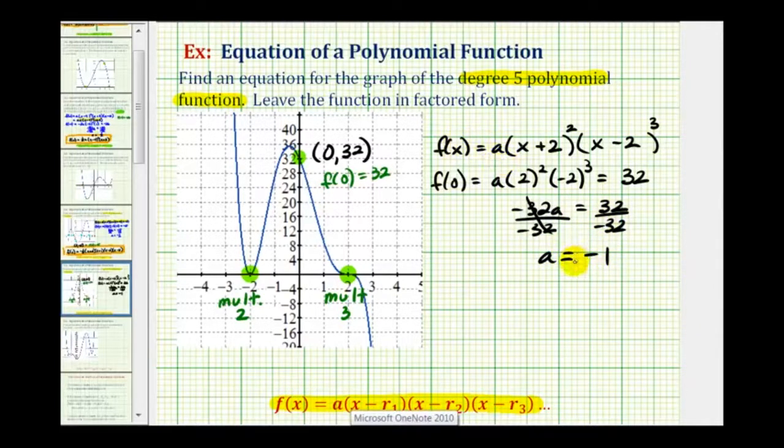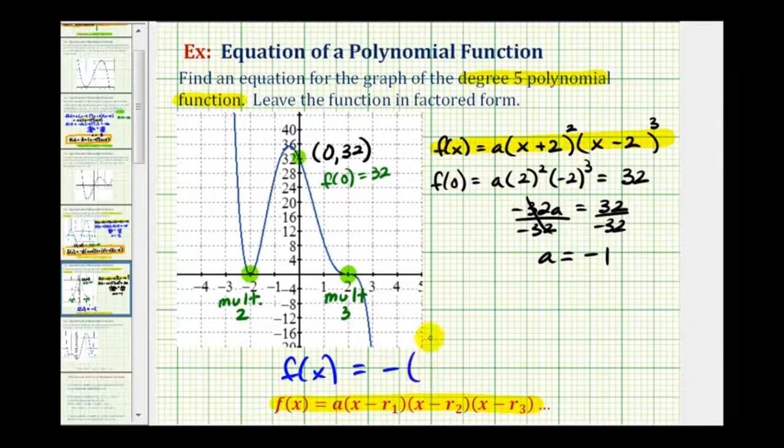And this is all we need to write the function in factored form. We'll substitute negative one for a in this form here. So we'll have f of x equals negative one, or just negative, and then the quantity x plus two squared times the quantity x minus two to the third.